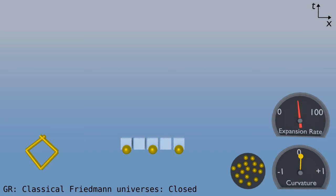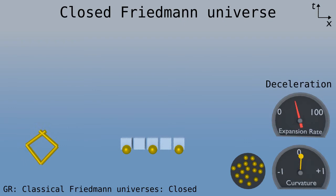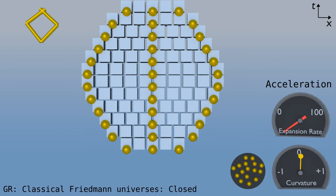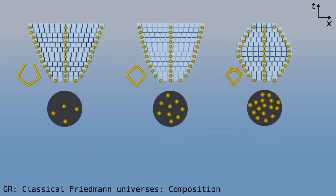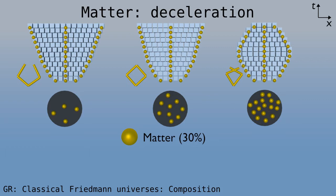The third Friedman universe is closed. The initial expansion stops, and then we get a big crunch. Notice how the curvature increases only during the first half, when the expansion decelerates. When it again accelerates, the curvature becomes more flat. Let's run that one more time. So we have the three classical Friedman universes, open, flat, and closed. They are filled with regular matter, the yellow particles, and the matter slows the expansion. The more matter, the more deceleration.